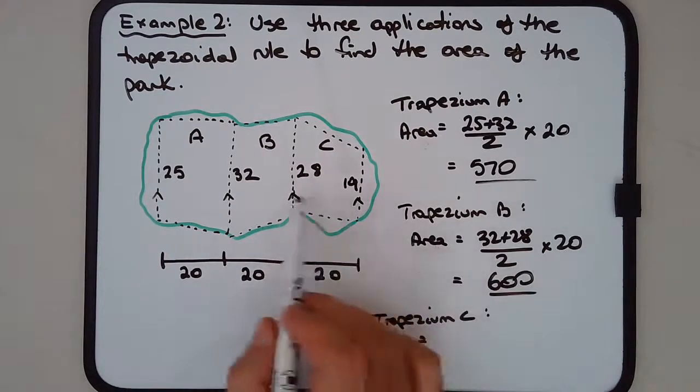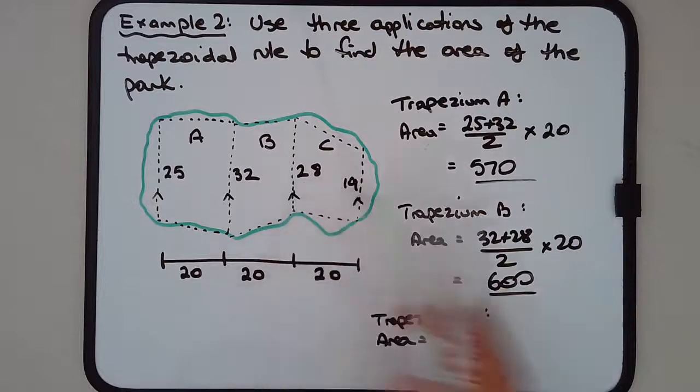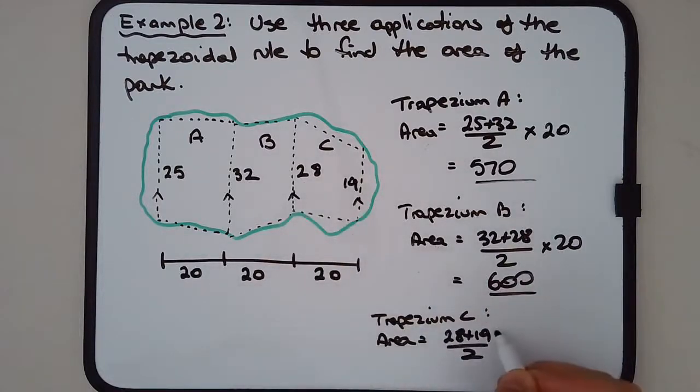And the last one, trapezium C: we have the two parallel lines, 28 plus 19. We'll take the average of those and multiply by 20. I'm just running out of space there, so 28 plus 19, and I get 470.